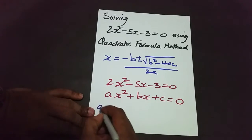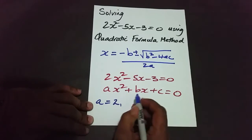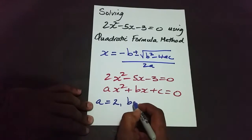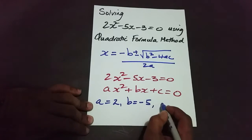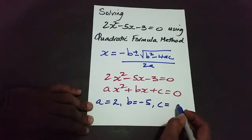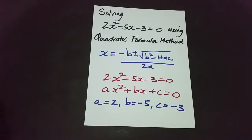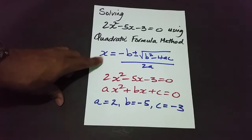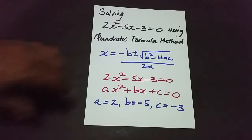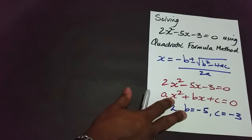We know that the value of a is positive 2, the value of b is negative 5, and the value of c is negative 3. All we're going to do now is plug these values carefully into the quadratic formula to find the values of x.